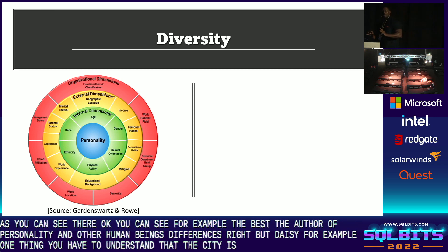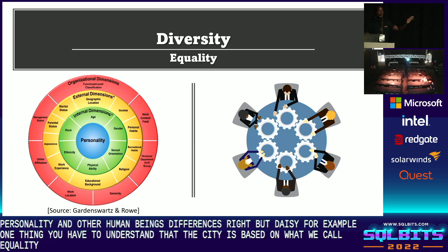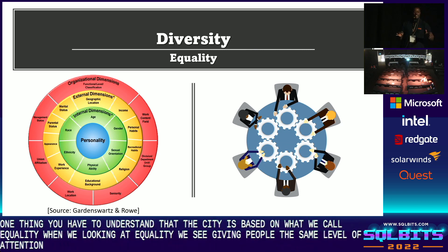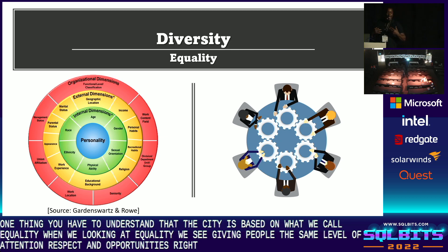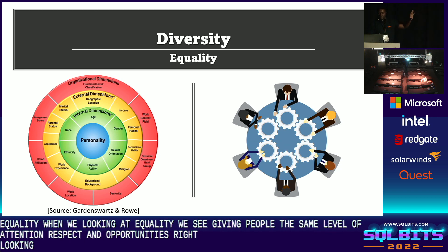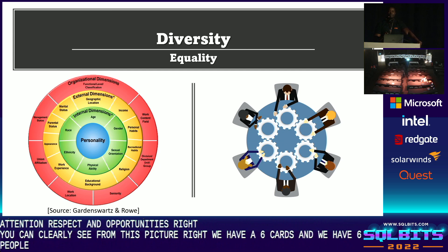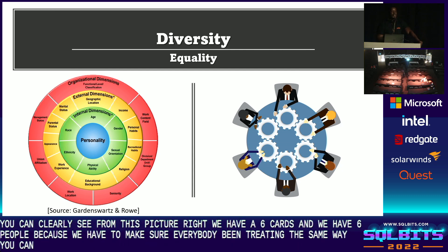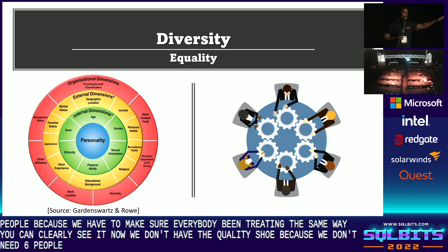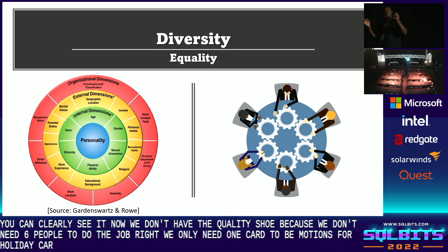One thing you have to understand: diversity is based on what we call equality. Equality means giving people the same level of attention, respect, and opportunities. Looking at this picture, we have six cogs and six people. Because we have to ensure everybody is treated the same way, we don't have an equality issue — we only need one cog to be in motion for all of the cogs to be in motion.